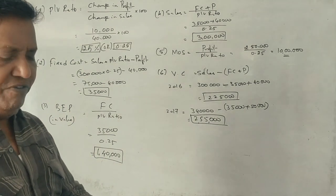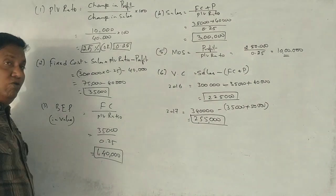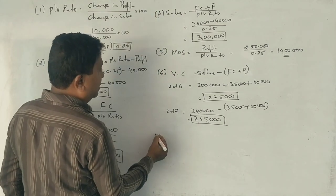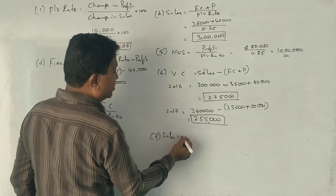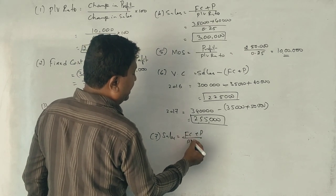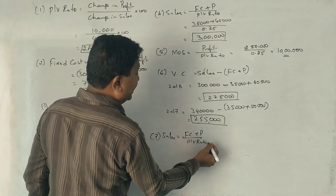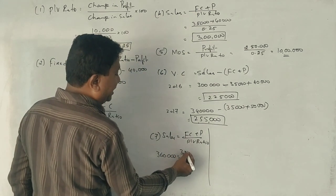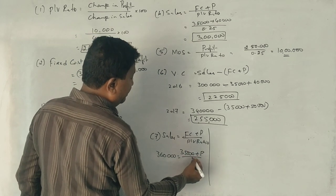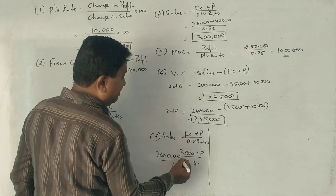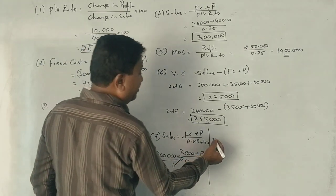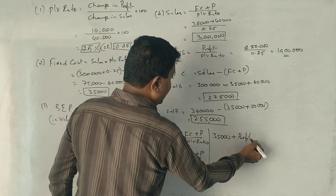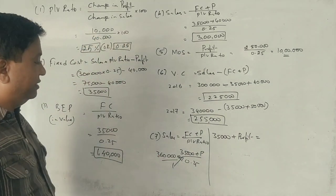Last question, profit when sales is 3,60,000. Sales equals fixed cost plus profit divided by PV ratio. Sales is 3,60,000, fixed cost is 35,000, PV ratio 0.25. Cross multiplication: 35,000 into 1 is 35,000 plus profit. 0.25 into 3,60,000 equals 90,000.